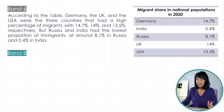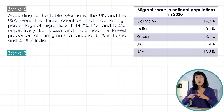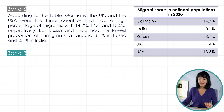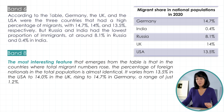If it does, it's a band 8. But no, it doesn't do either of those things. So how can we highlight the key features or the key pieces of information? I think the fact that the three countries all had remarkably similar total percentages of migrants is interesting. So let's try it this way: 'The most interesting feature that emerges from the table is that in the countries where total migrant numbers rose, the percentage of foreign nationals in the total population is almost identical. It varies from 13.5% in the USA to 14% in the UK, rising to 14.7% in Germany — a range of just 1.2%.'